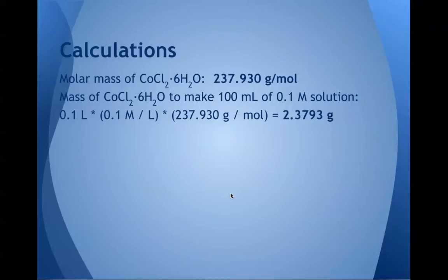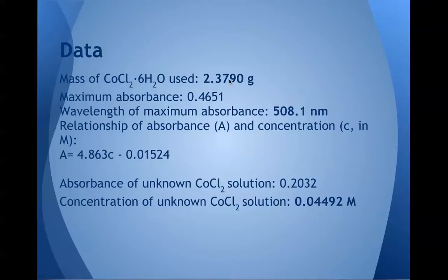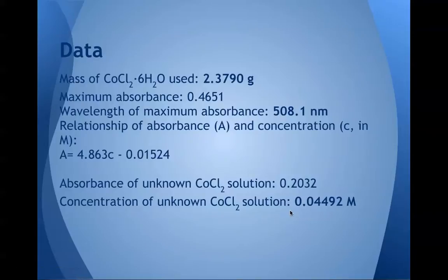At the beginning of the lab, we first calculated the amount of cobalt chloride hexahydrate needed to make 100 milliliters of 0.1 molar solution. Here's our data: we determined the mass of CoCl2·6H2O to be 2.3790 grams used. We found the wavelength of maximum absorbance to be 508.1 nanometers, found the linear relationship and the absorbance of the unknown cobalt chloride solution, and finally the concentration of the unknown cobalt chloride solution was 0.04492 molar.